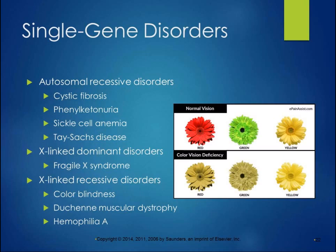Color vision deficiency is an interesting example — if you're getting flowers for someone who is colorblind, get them yellow flowers, because they won't appreciate the red and green ones, or they'll think they're yellow anyway.